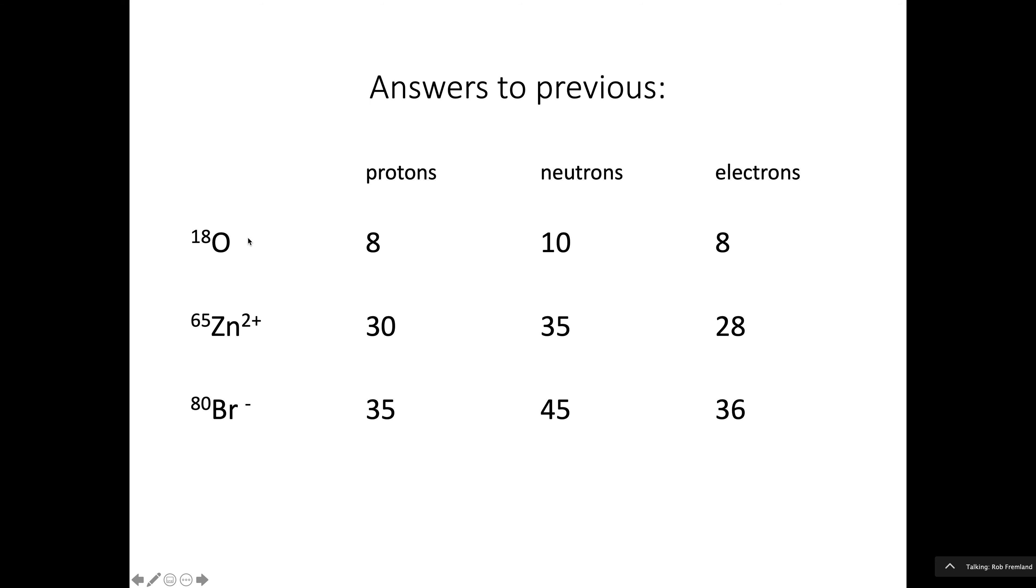Well, I hope you're back from pause. See how you did. And again, if it's oxygen, there are eight protons. Zinc has 30 protons. Bromine has 35 protons. 18 minus 8 is 10. 65 minus 30 is 35. 80 minus 35 is 45. To get the electrons, this is uncharged, so it's the same. 2 plus means that there's two fewer electrons than protons. Negative 1 means that there's one extra.